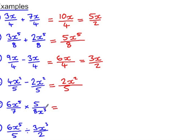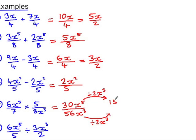Remember when multiplying we multiply the numerators. So 6x to the power of 5 times 5 is 30x to the power of 5, divided by 7 times 8x cubed. That's 56x cubed. And I can divide both of these by 2x cubed to get 15x squared all over 28.